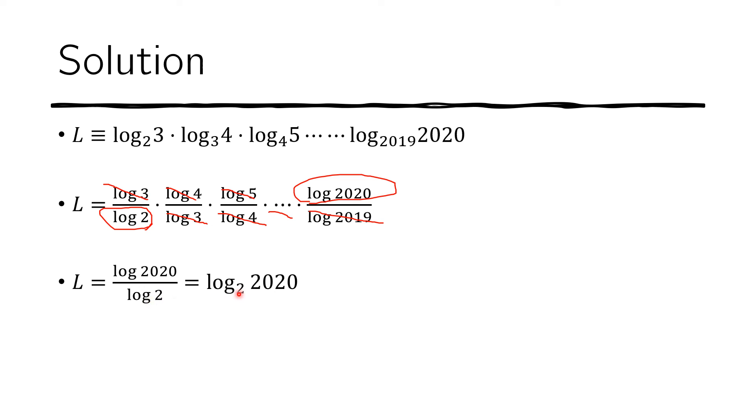And we put the base. This denominator now becomes the base here. And this one goes here. And then we can write this. This is equivalent to this expression, which is 2 to the L exponent equals 2020.